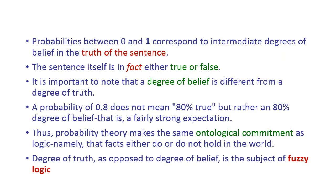Probabilities lie between 0 and 1, corresponding to intermediate degrees of belief in the truth of sentences. The sentence itself is in fact either true or false. It is important to note that a degree of belief is different from a degree of truth. A probability of 0.8 does not mean 80 percent true, but rather an 80 percent degree of belief — that is, a fairly strong expectation.